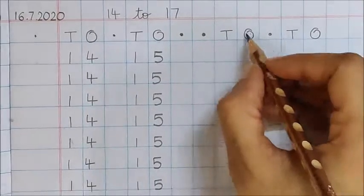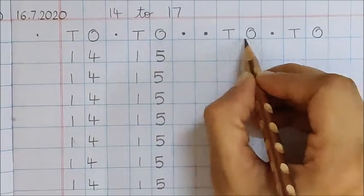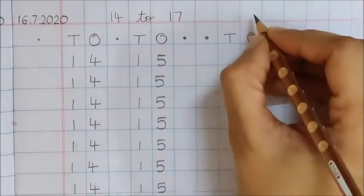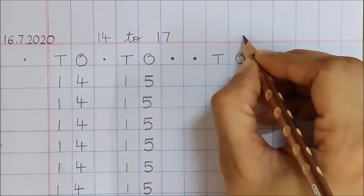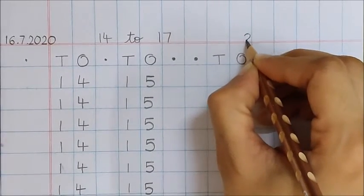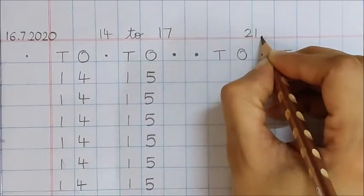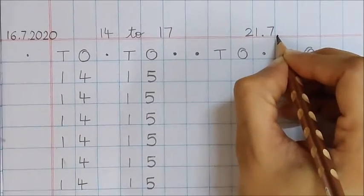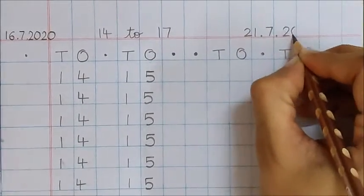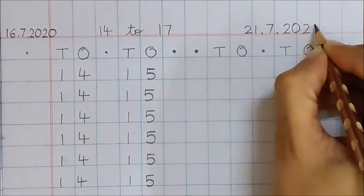Above this TO, write down tomorrow's date. Tomorrow is July 21. So write down the date here: 21 dot 7 dot 20 20.